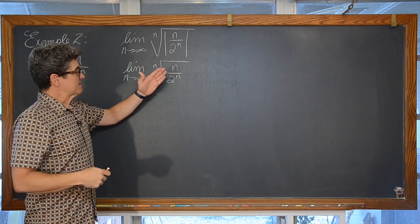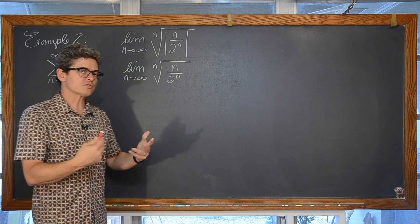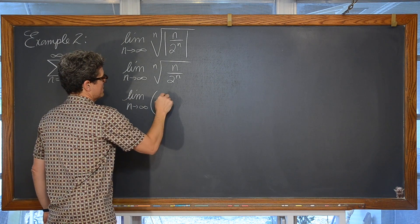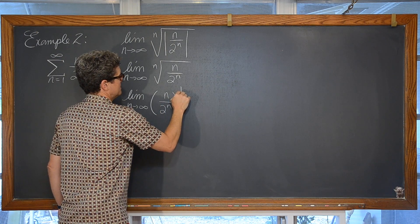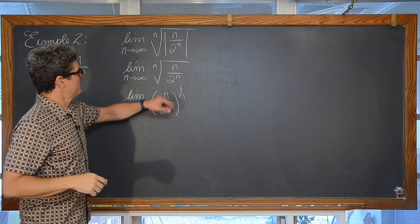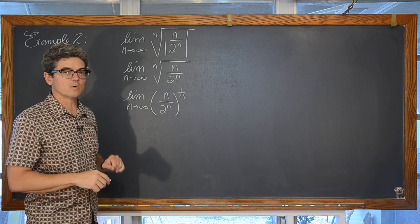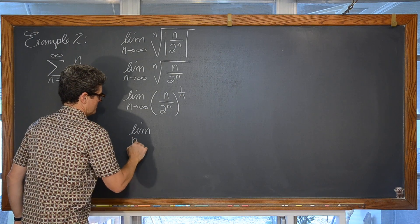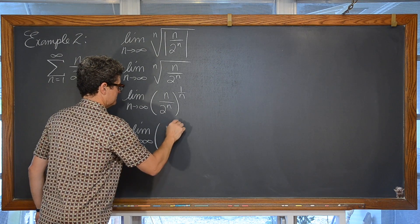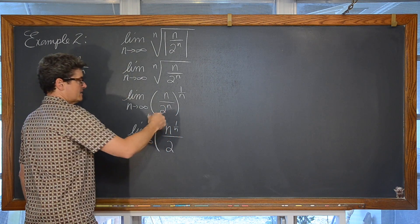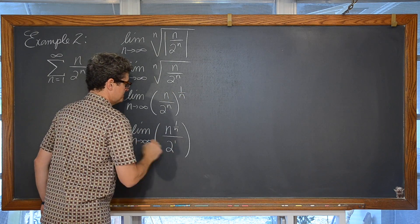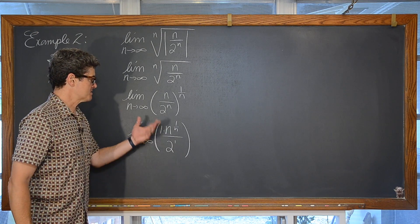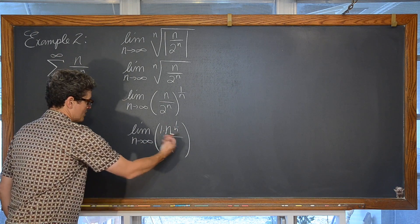Now we are going to rewrite this radical with a fractional or rational exponent, showing all of the steps. The nth root means a power of 1/n. Applying that power to both the numerator and denominator using the power-to-power rule, n times 1/n is just going to be 1. So we have 1/2 times n to the 1/n power. We can bring that 1/2 out front.